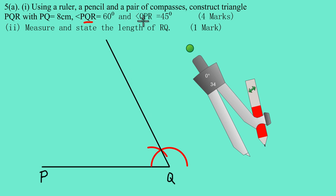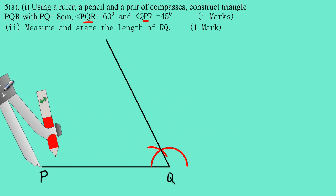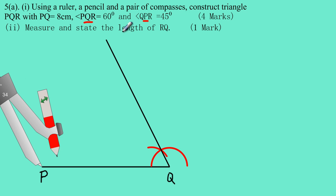The next piece of information is that angle QPR equals 45 degrees. Note that P is the middle letter, so the 45 degree angle is formed at point P. To construct 45 degrees, you must first construct a 90 degree angle and then bisect it — cut it into two equal parts. Bisecting a 90 degree angle gives you 45 degrees.